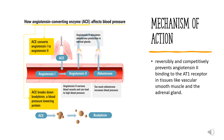Valsartan also affects the renin-angiotensin-aldosterone system, RAAS, which plays an important role in hemostasis and regulation of kidney, vascular, and cardiac functions. Pharmacological blockade of RAAS via AT1 receptor blockade inhibits negative regulatory feedback within RAAS, which is a contributing factor to the pathogenesis and progression of cardiovascular disease, heart failure, and renal disease.